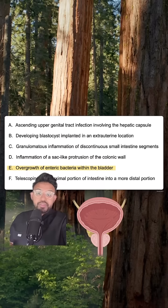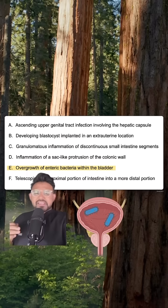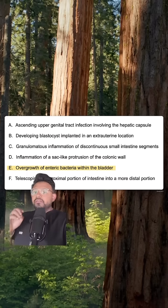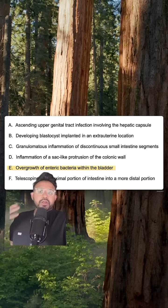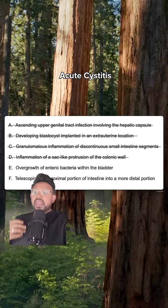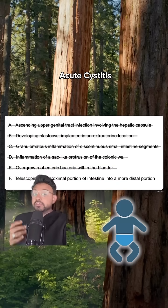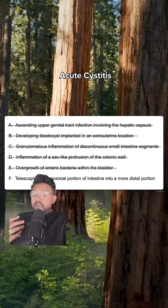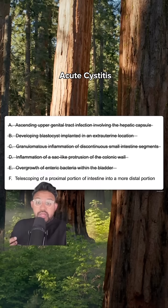Answer choice E: overgrowth of enteric bacteria within the bladder. This is going to be very characteristic of translocation of GI flora going to the bladder, causing acute cystitis. Remember that this can be seen on your pediatric shelf in a patient who recently became toilet trained and is not wiping correctly, or if a patient had some post-op complication with a fistula.